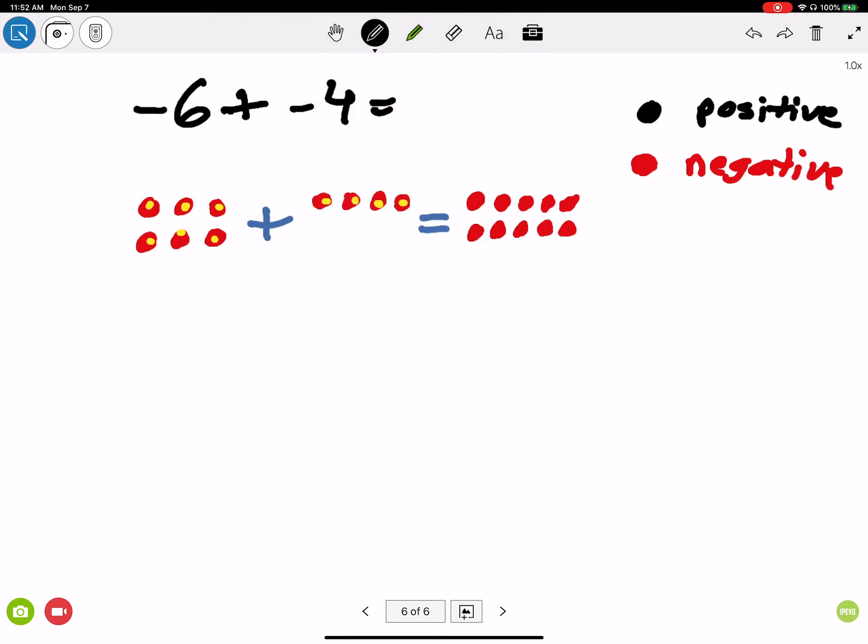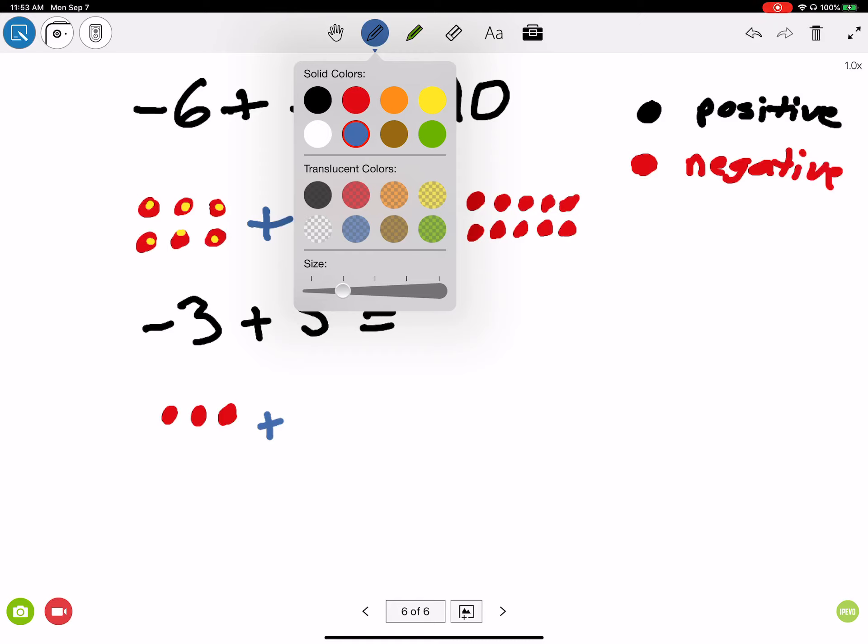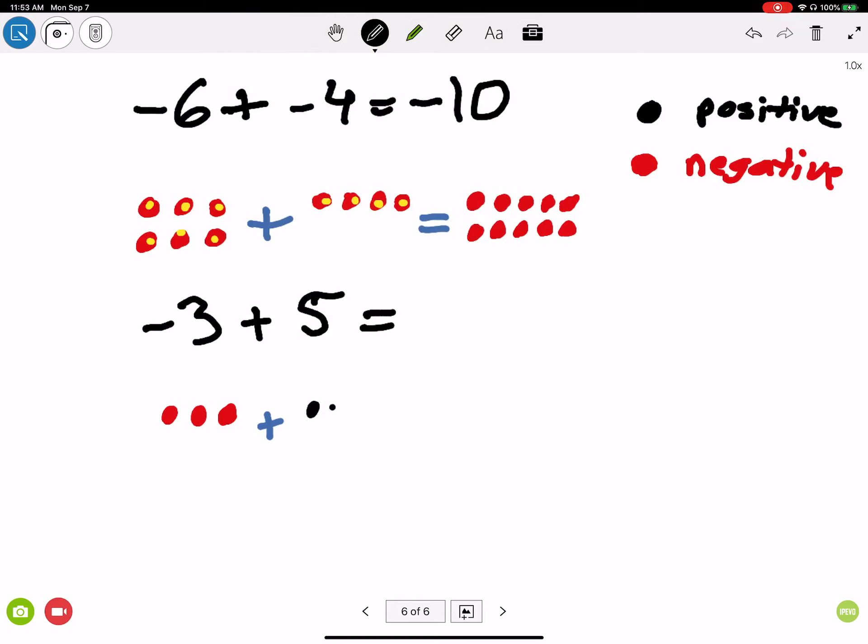If I gave you an example with unlike signs, so let's say I've got negative 3 plus 5, let's model this. Well, negative 3 is here: we have 1, 2, 3, plus 1, 2, 3, 4, 5.